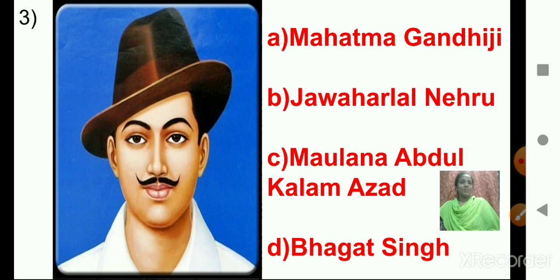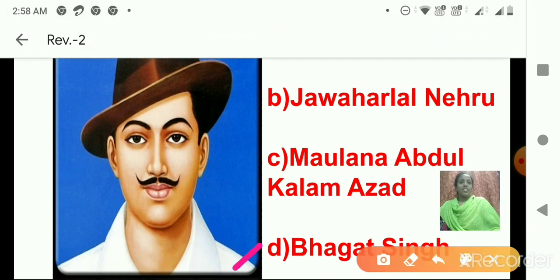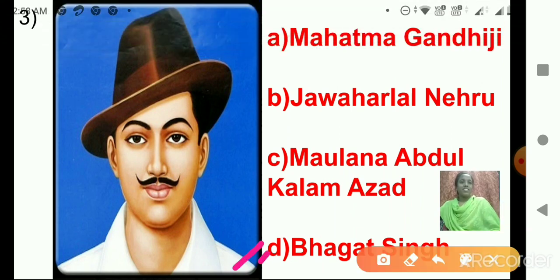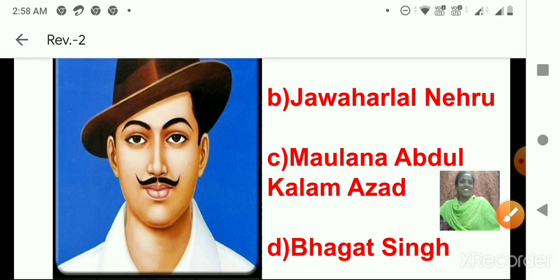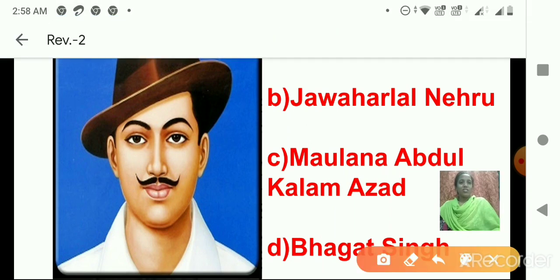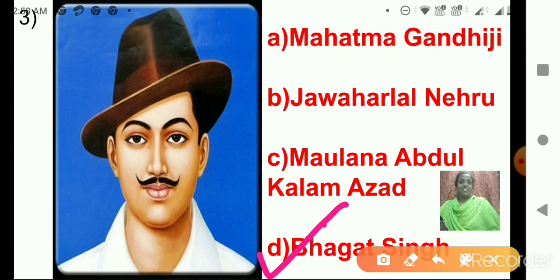Third one — very easy to identify. Let's see the options. A: Mahatma Gandhi. B: Jawaharlal Nehru. C: Maulana Abul Kalam Azad. D: Bhagat Singh. Very good — option D is the correct answer. This image is of Bhagat Singh.